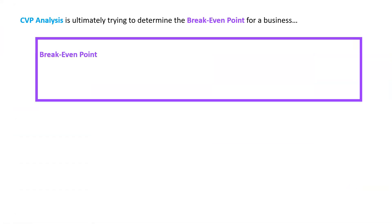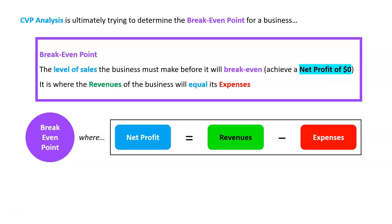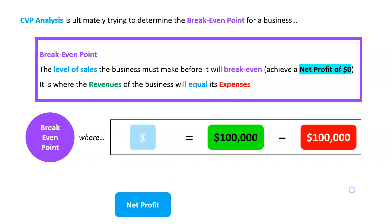So that means we need to calculate what is called the break-even point. What is the break-even point? It is the level of sales the business must make before it will break even — in other words, achieve a net profit of zero. In other words, it's where the revenues of the business will equal its expenses. For example, if we made revenues of $100,000 and we had expenses of $100,000, we'd have a profit of zero. That would be our break-even point — we would need to achieve sales of $100,000 in order to break even.